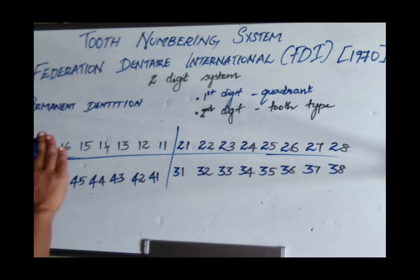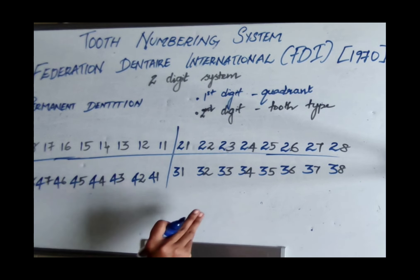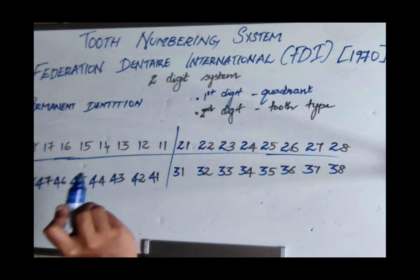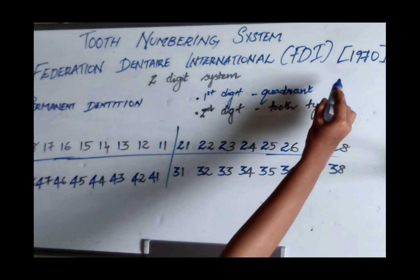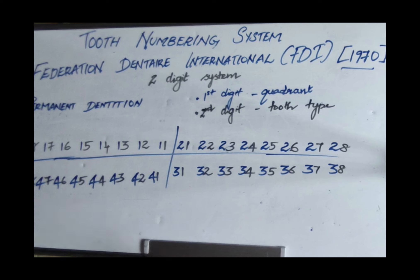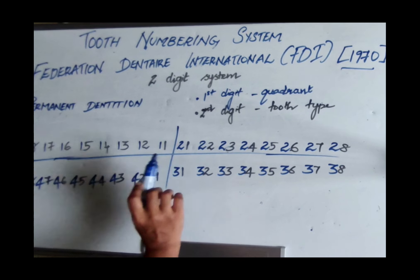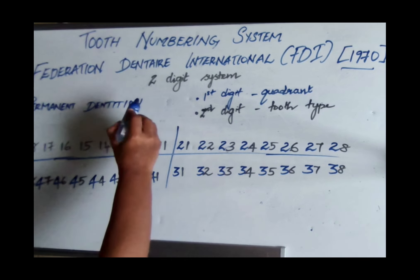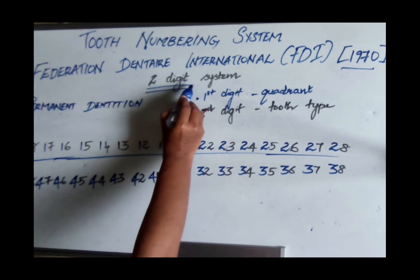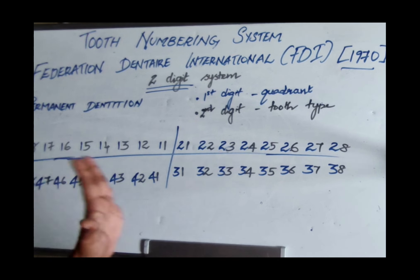Now the FDI (Federation Dental International) system — the most commonly used tooth numbering system. It was adopted by FDI in 1970 and later accepted by WHO and the International Dental Research. The FDI system is a two-digit system, where two digits together represent a single tooth. It has separate numbering for permanent and primary dentition.